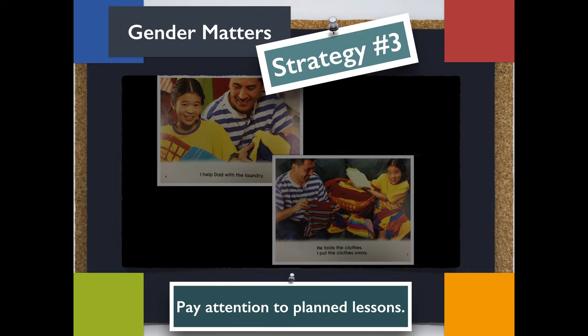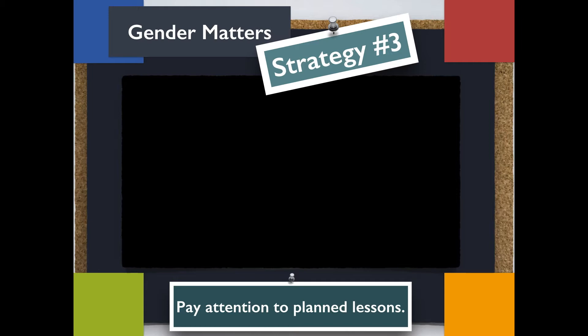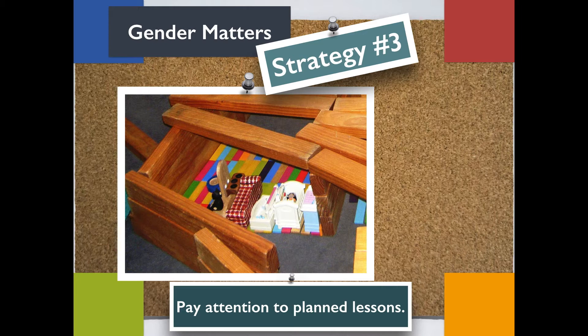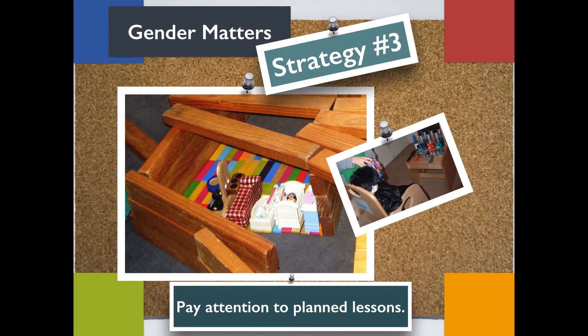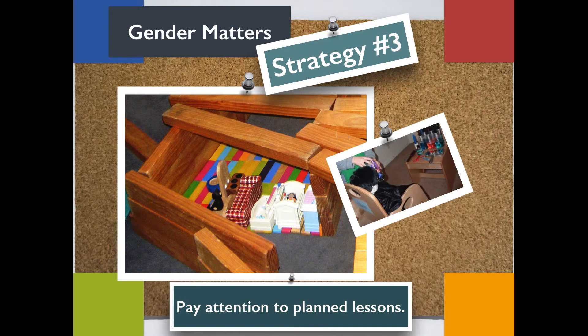As you plan your lessons, pay attention to your classroom materials and displays. For example, small dolls can be accessible in the block area, and materials for a play salon could include barber tools and magazines. Bulletin boards and picture displays can show various occupations of both males and females — for example, representations may include male nurses or female firefighters.